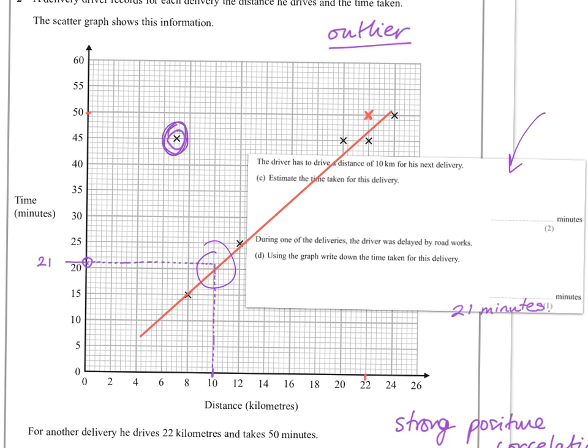So during one of the deliveries, the driver was delayed by roadworks. Well it has to be here then, doesn't it? Okay, because I mentioned that earlier that this was an outlier, i.e. a strange piece of data that didn't fit in with the others. So I would just say here, using the graph write down the time taken for this delivery. But if it wants the graph used then use it, and just circle this part here showing clearly that 45 minutes would be your answer. Okay, so that's question two.